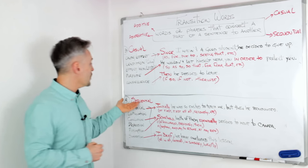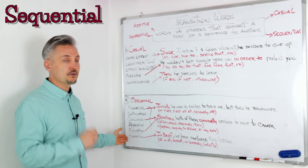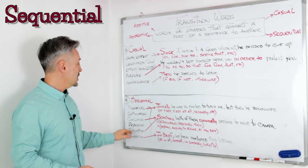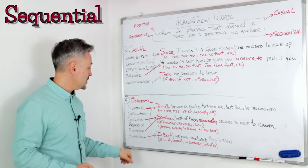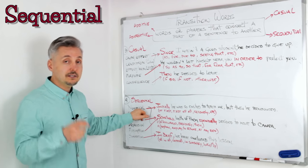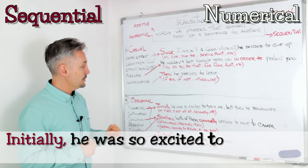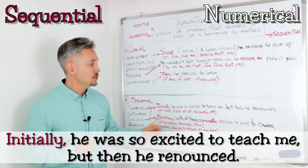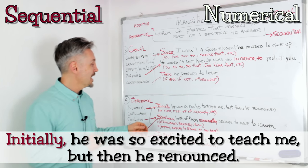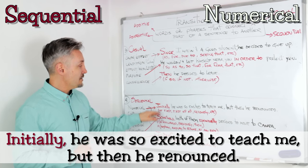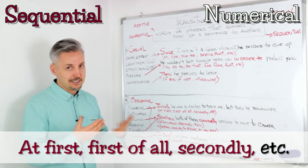Let's look at the fourth and last group: sequential. It has six subgroups: numerical, continuation, conclusion, digression, resumption, and summation. The first is numerical. For example: 'Initially he was so excited to teach me, but then he renounced.' You can also say 'at first,' 'first of all,' 'secondly,' etc.